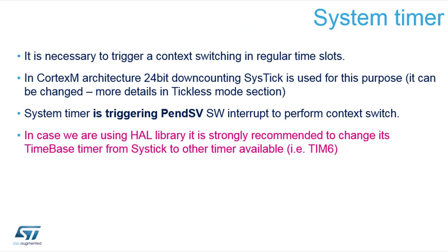The system timer is always allocated by FreeRTOS. When you use STM32 with the hardware abstraction layer (HAL), HAL also needs a time base. Without FreeRTOS, SysTick is used as the HAL time base. However, if you activate FreeRTOS, CubeMX will warn you that you need to use a different time base for HAL. Using SysTick for both HAL and FreeRTOS is dangerous — combining multiple tasks waiting on the same SysTick interrupt for timeouts and context switching would create a code deadlock from which you wouldn't be able to recover.